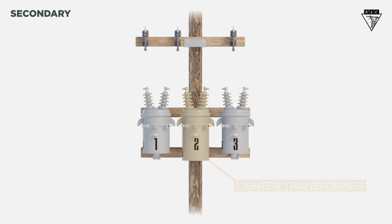First, bond all transformer cases together and tie them to ground. Then, we'll connect the lighter transformer's X2 bushing to the neutral.